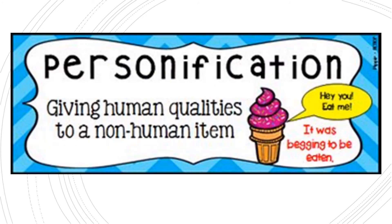Next, personification: giving human qualities to a non-human item. For instance, 'it was begging to be eaten' — the ice cream was begging to be eaten. The ice cream didn't literally beg a person to eat it, but the person thought that the ice cream really wants to be eaten and enjoyed. Therefore, we use personification in that sentence.